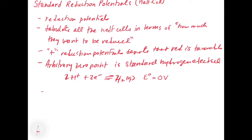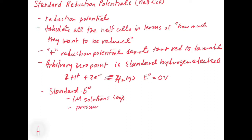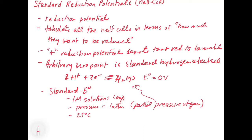Now we need to talk about how these are measured—specifically what it means to be standard. The E°, which is the standard cell potential, gets the naught symbol because it's a standard. These have to be at one molar aqueous solutions. The partial pressure of a gas has to equal one atmosphere, and the temperature has to be at 25 degrees Celsius. So that defines the set of standard conditions under which these standard reduction potentials are measured. The unit they get is volts.